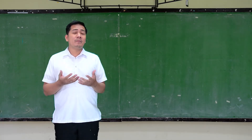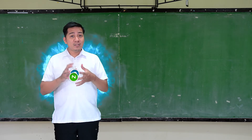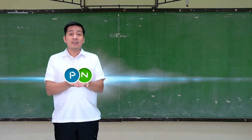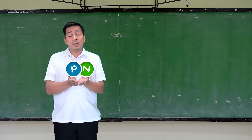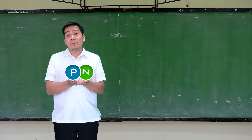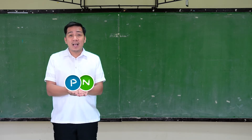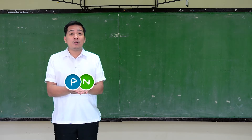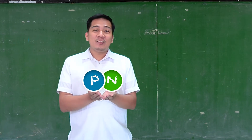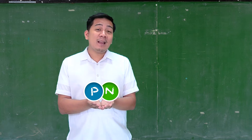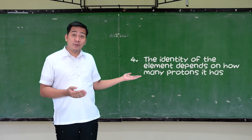Basically, nucleosynthesis starts when a proton and a neutron combine to form deuteron. Ang deuteron ay isang isotope ng hydrogen — we will talk about isotopes in our later chapters. Pero paano natin nalaman na ang deuteron ay isang isotope ng hydrogen? Ang deuteron ay may isang proton. Kaya alam natin na ito ay hydrogen. Remember concept number four: the identity of an element depends on how many protons it has.